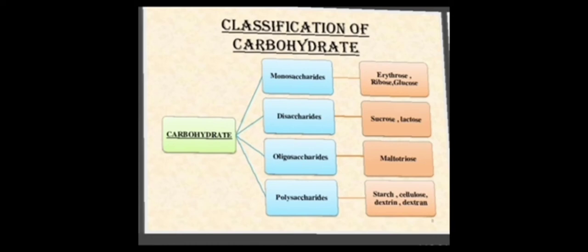Next is disaccharides. Disaccharides contain two monosaccharides joined by glycosidic linkage. Maltose contains two units of glucose, lactose contains one glucose and one galactose, and sucrose contains one glucose and one fructose.